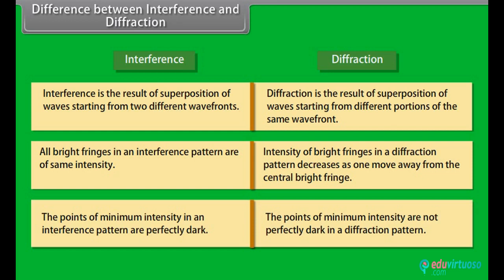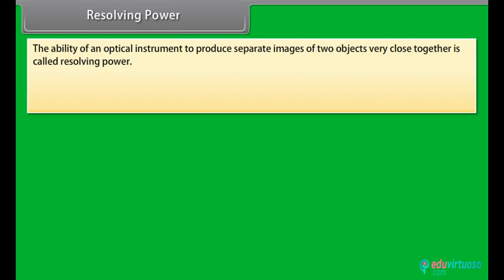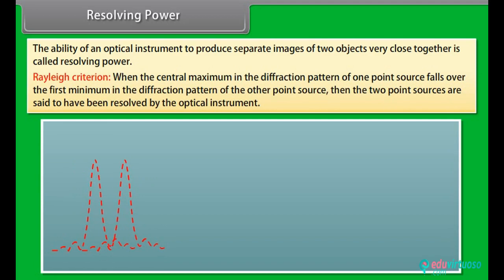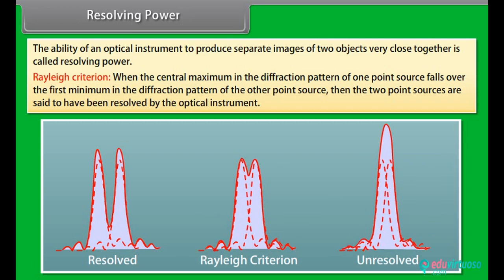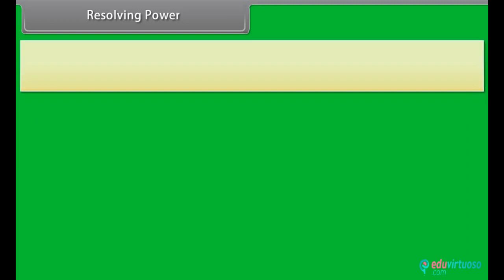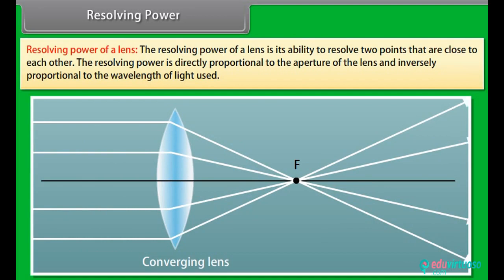Resolving power is the ability of an optical instrument to produce separate images of two objects very close together. Rayleigh criteria: when the central maximum in the diffraction pattern of one point source falls over the first minimum in the diffraction pattern of the other, the two sources are said to be resolved. The resolving power of a lens is directly proportional to its aperture and inversely proportional to the wavelength of light used.